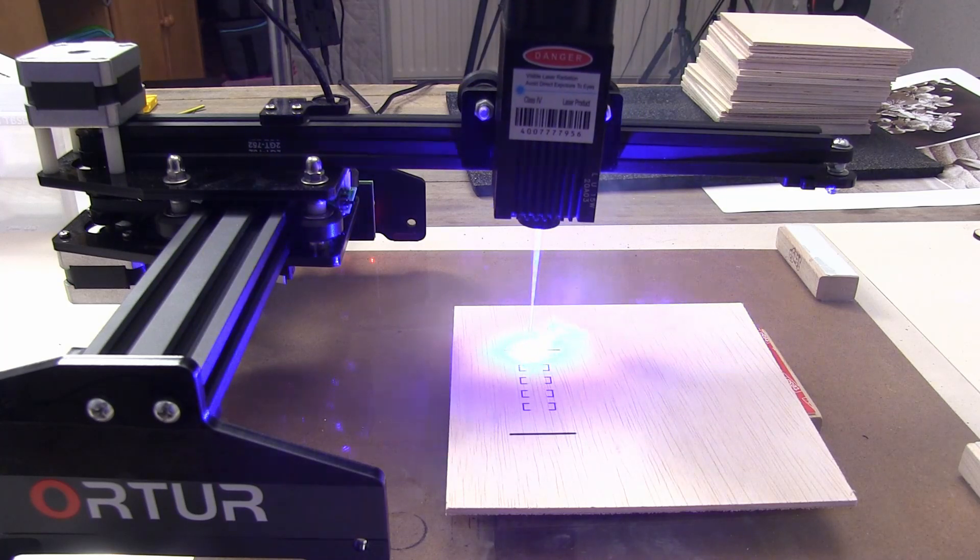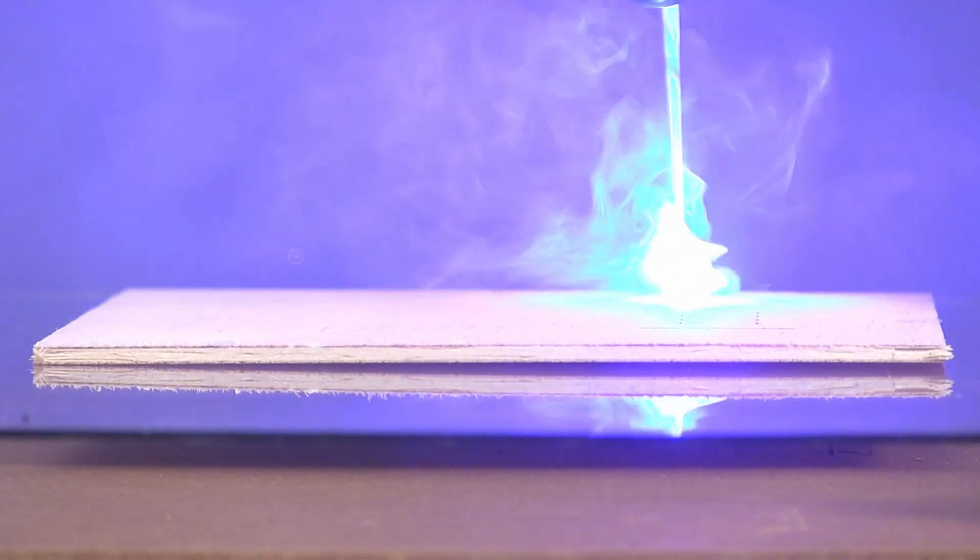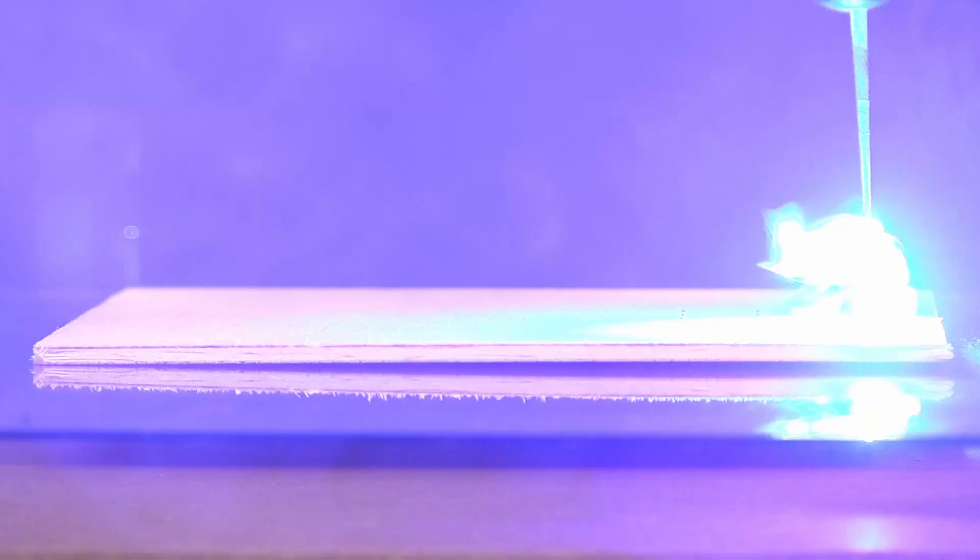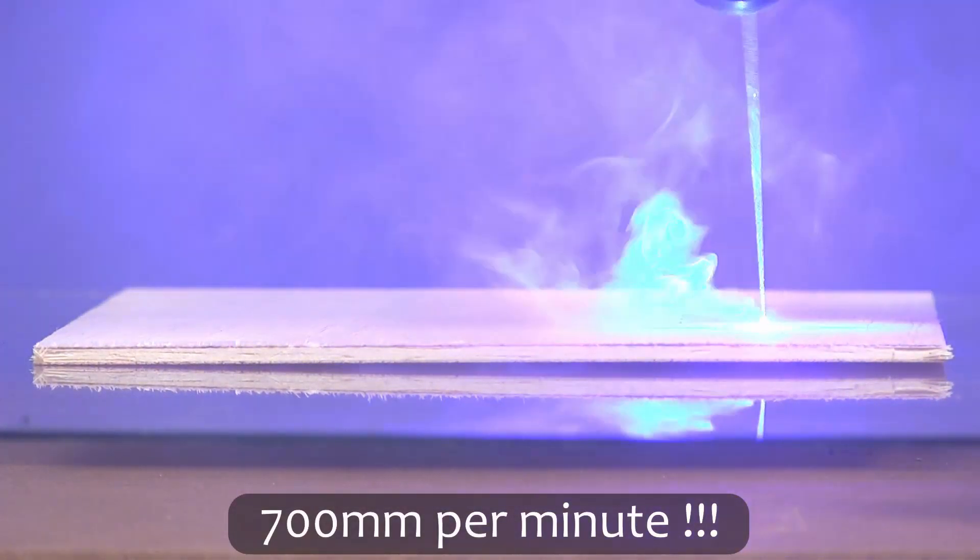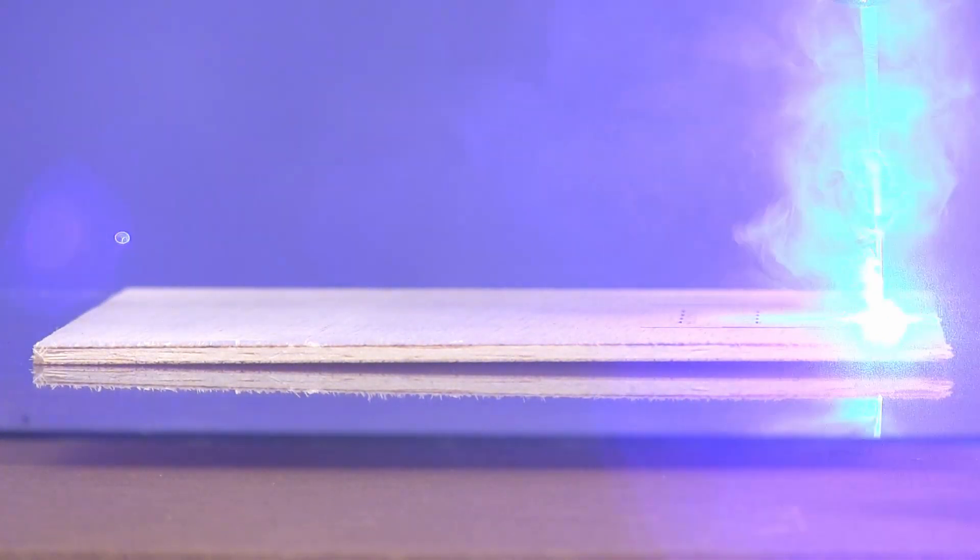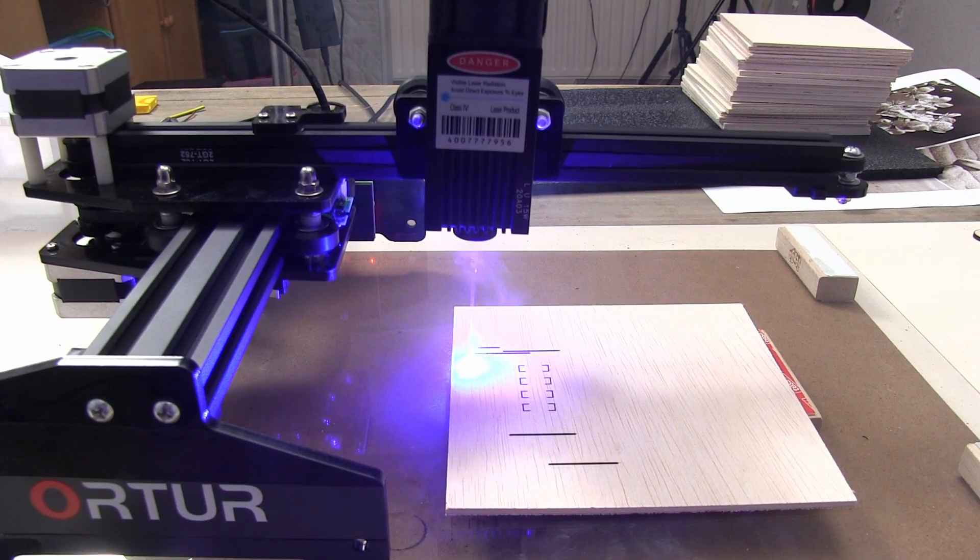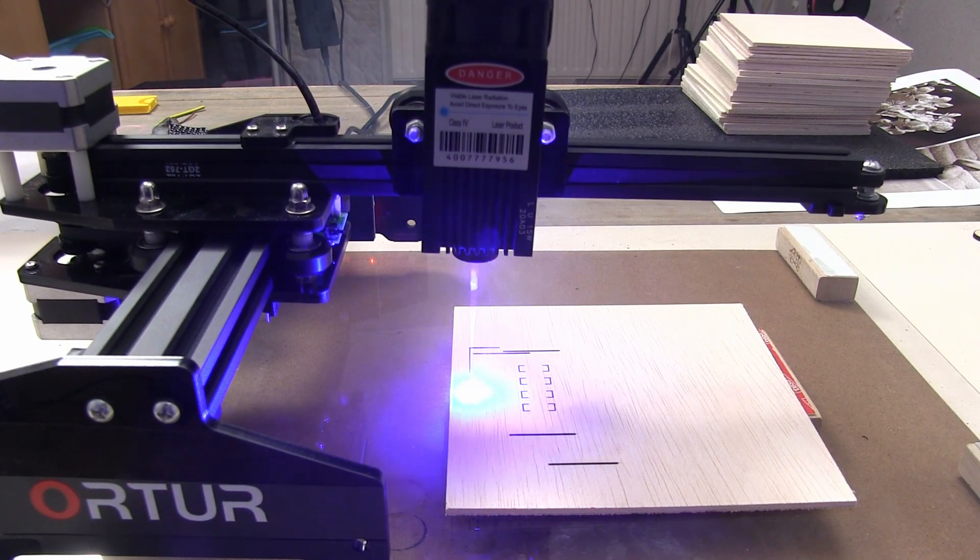Now what you are seeing here is my Orther Laser Master which is cutting at 60% of its power at 700 millimeters per second. As you can see, the laser is very well capable of cutting into plywood.